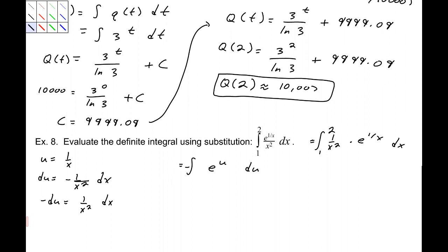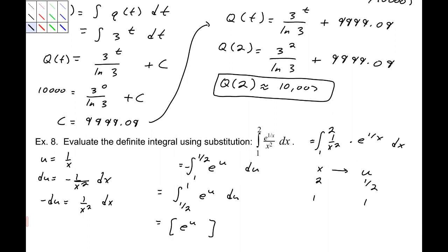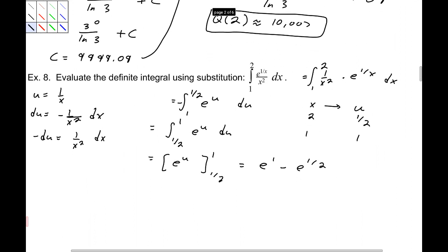When we replace, the 1/x squared dx is taken up by negative du, and it becomes e to the u. Now I'll change the bounds: the original limits are x from 1 to 2, and since u equals 1/x, my u-limits become 1 and 1/2. So I'm integrating from 1 to 1/2 of negative e to the u du. Using the property of integrals, we convert this to the integral from 1/2 to 1 of e to the u du — changing negative to positive. That evaluates to e to the u from 1/2 to 1, giving e to the 1 minus e to the 1/2, which is approximately 1.0696.